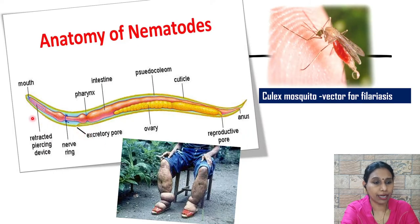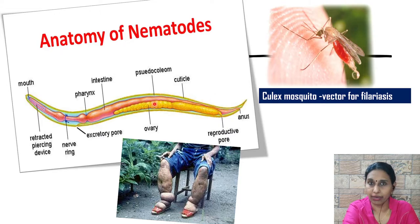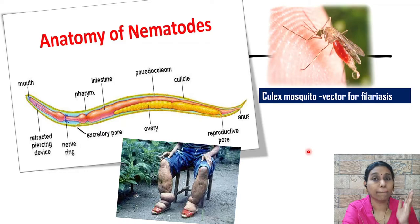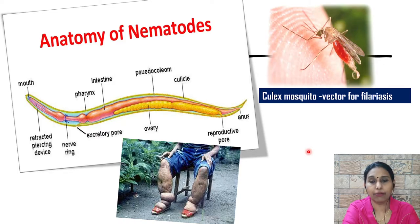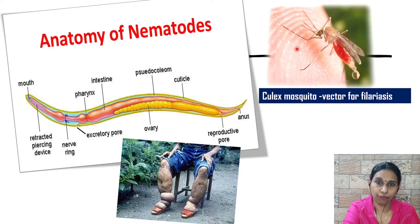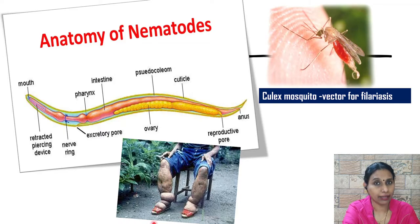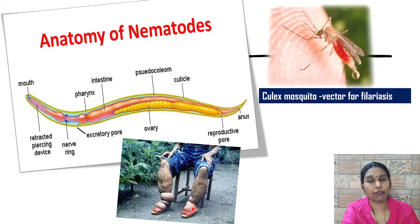Looking at the anatomy of nematodes, you can see the mouth and the pharynx, and the alimentary canal is not properly developed — it is only in the process of developing. The pseudocoelom, the false coelom, is visible in the diagram. Examples include roundworm, pinworm, and filarial worm. The filarial worm causes a disease called filariasis, spread by the bite of a mosquito. It grows in the lymphatic vessels. When a mosquito bites a person suffering from filariasis, the larvae are transferred from one person to another. People suffering from filariasis develop very swollen legs due to accumulation of lymph, because the lymph vessels get blocked. This condition is also called elephantiasis.